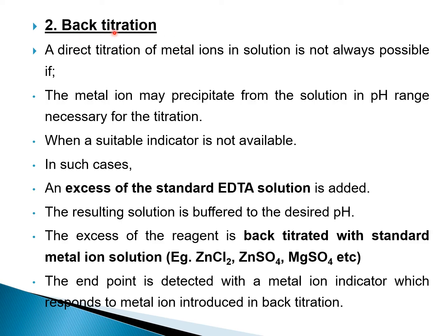The next method is back titration. Direct titration of a metal ion is not always possible — this is where back titration becomes important. Direct titration may not be possible because the metal ion may precipitate from solution at the pH range necessary for titration, or when a suitable indicator is not available.